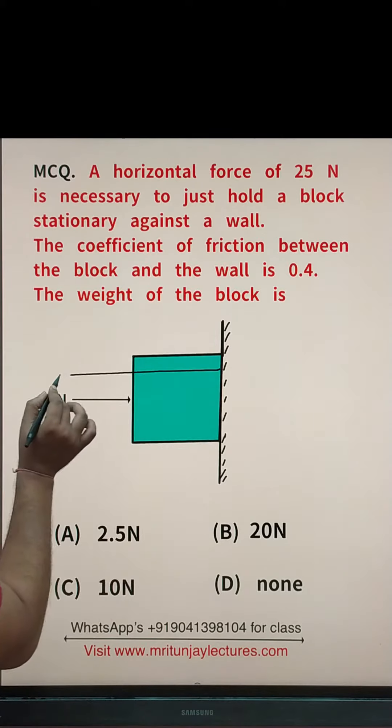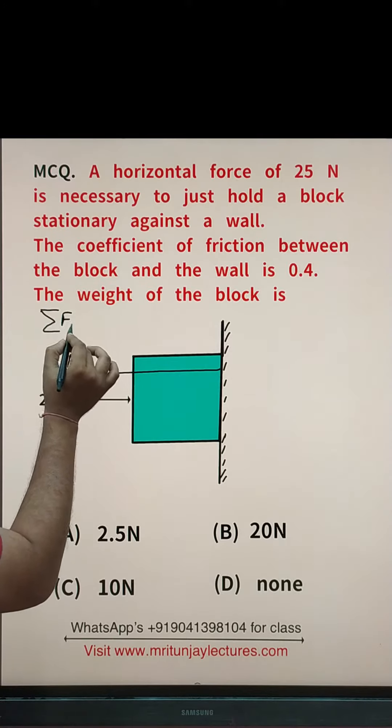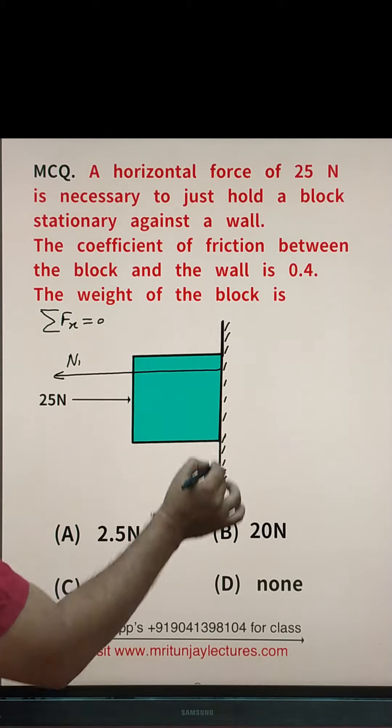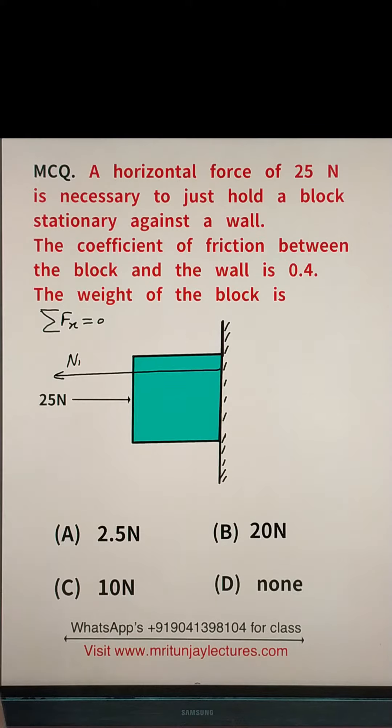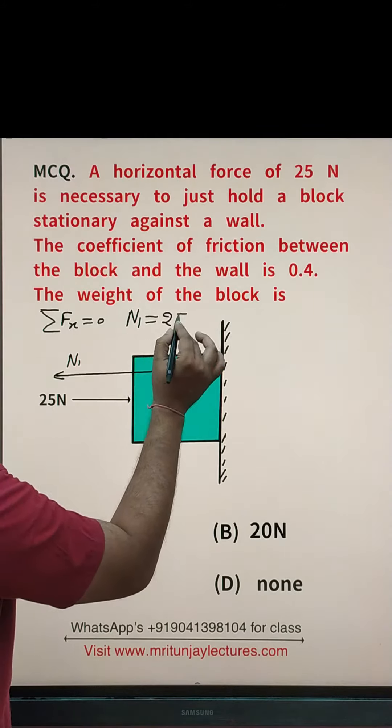So, normal force in which direction? Here, that is N1. Fx is 0 because this is the wall. That's why net force in x direction is 0. So, N1 is equal to how much? 25 N. Clear or not?